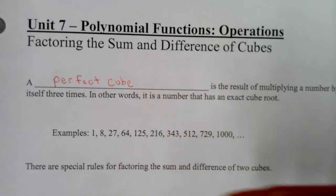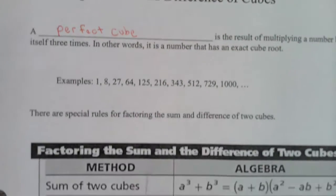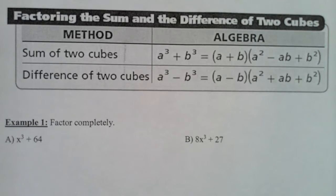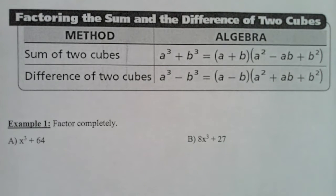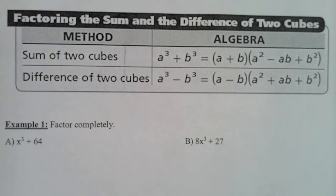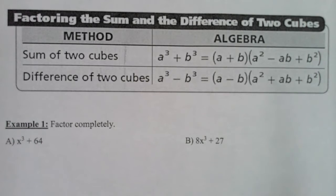There are special rules for factoring the sum and difference of two cubes. Sum means addition and difference means subtraction. These are two rules you should try to memorize — and it's not that bad. They're very similar. The first one says: a³ + b³ equals (a + b)(a² − ab + b²). That's the sum of two cubes.